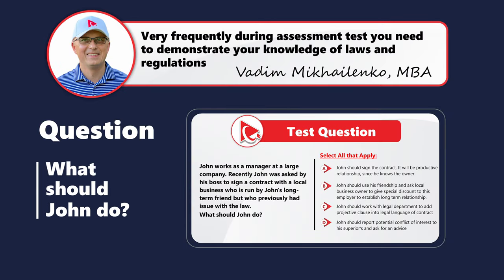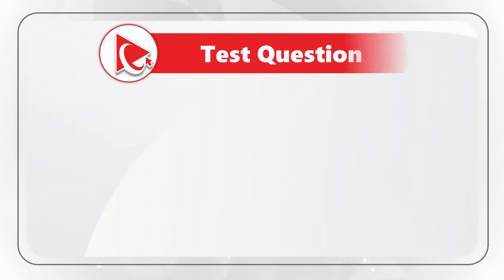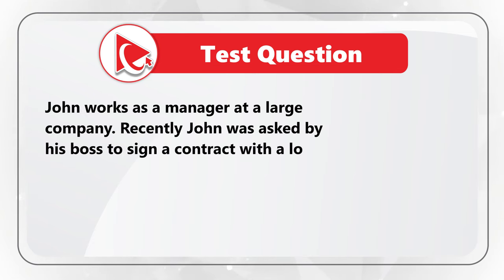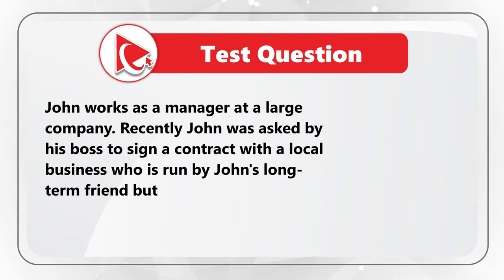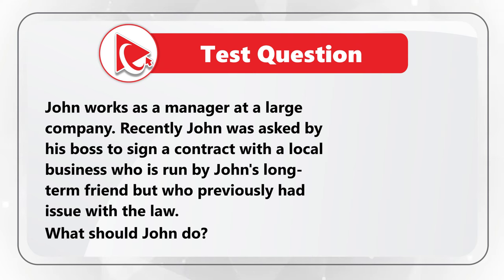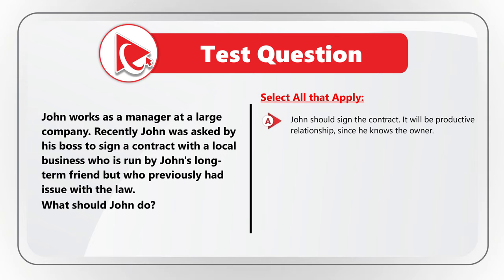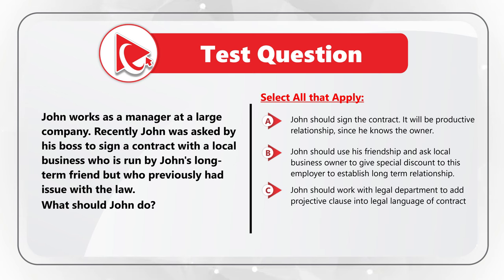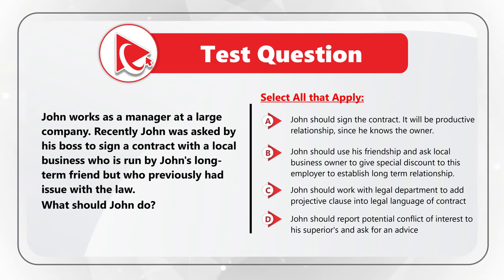Here's a very interesting question which tests unusual traits and doesn't have an obvious answer. John works as a manager at a large company. Recently, John was asked by his boss to sign a contract with a local business run by John's longtime friend, who previously had issues with the law. The choices are: A — sign the contract since he knows the owner; B — use his friendship to ask for a special discount; C — work with the legal department to add a protective clause; D — report potential conflict of interest to his superiors and ask for advice.